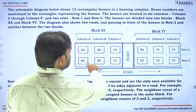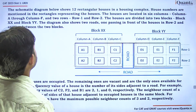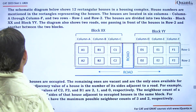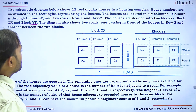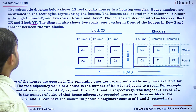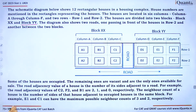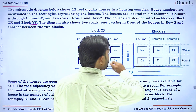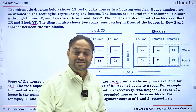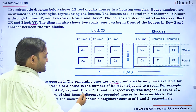The houses are located in six columns — Column A through Column F — and two rows: Row 1 and Row 2. The houses are divided into two blocks: Block XX and Block YY. The diagram also shows two roads — one passing in front of the houses in Row 2 and another between the two blocks. Some of the houses are occupied and the remaining ones are vacant. The vacant ones are available for sale, not the occupied ones.